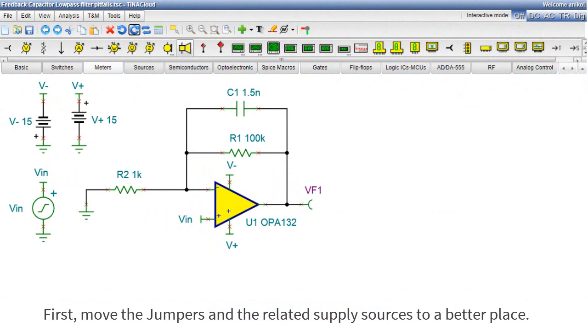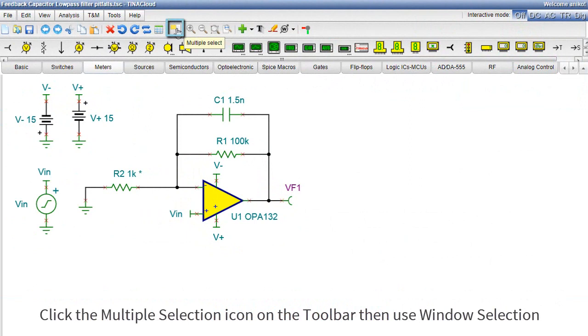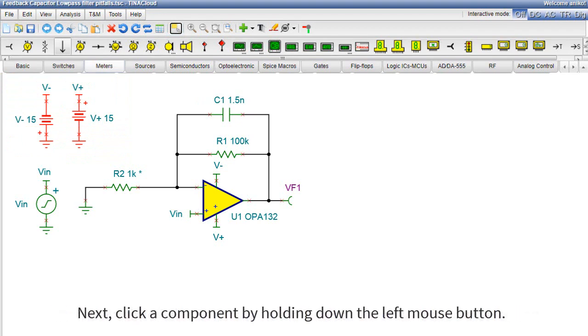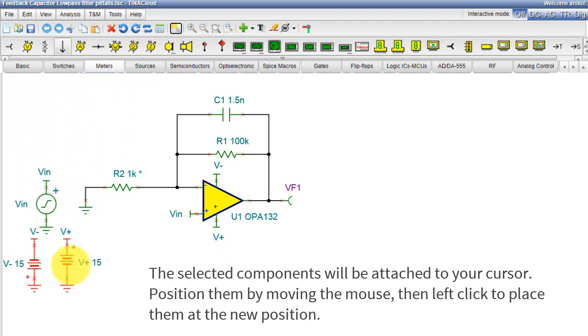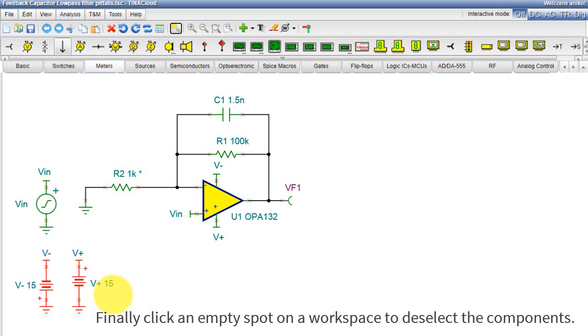First, move the jumpers and the related supply sources to a better place. Click the Multiple Selection icon on the toolbar, then use Window Selection. Next, click a component by holding down the left mouse button. The selected components will be attached to your cursor. Position them by moving the mouse, then left-click to place them at the new position. Finally, click an empty spot on the workspace to deselect the components.